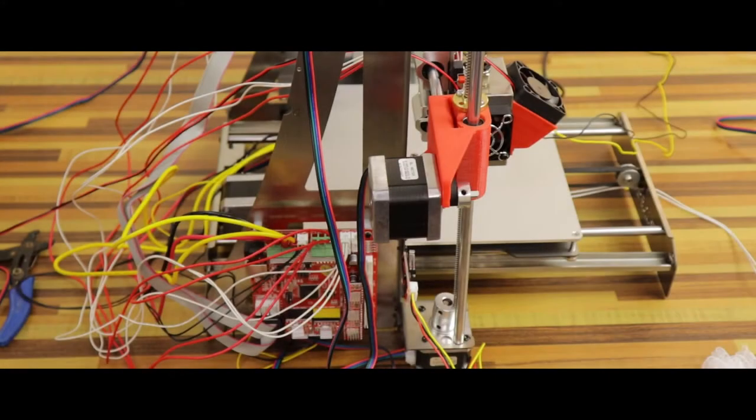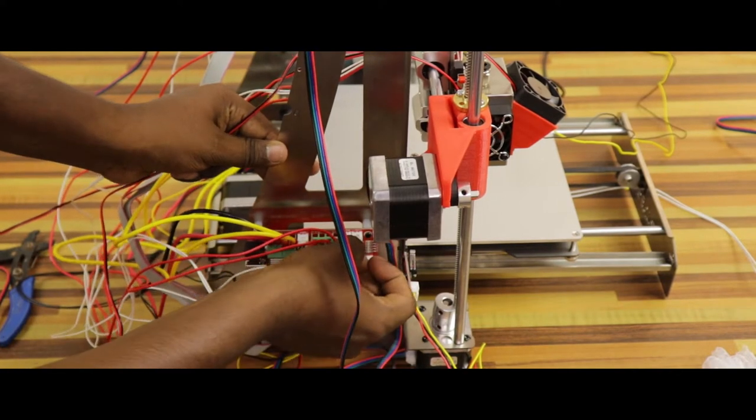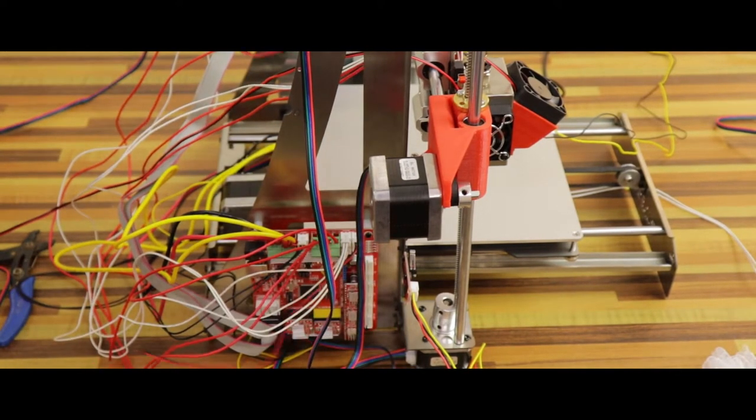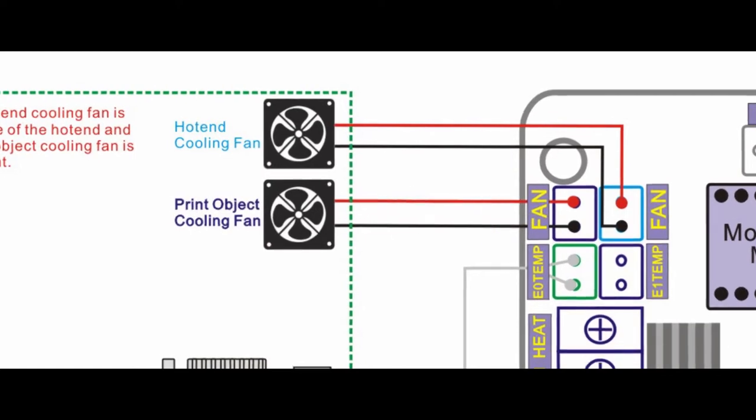Let's connect the hotend cooling fan and the print object cooling fan to the sockets labeled as fan on the controller board. The first socket is for the print object cooling fan and the second socket is for the hotend cooling fan.